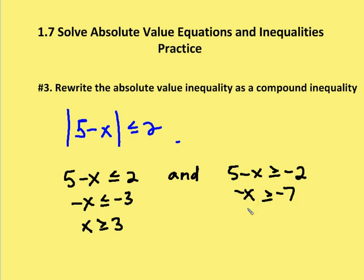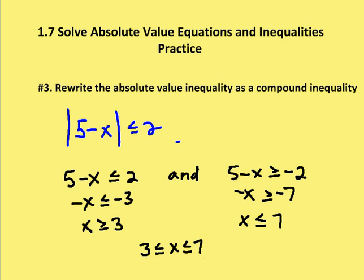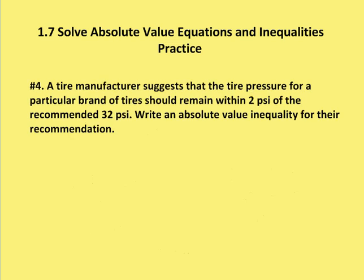And again, dividing by negative 1, I get x. Changing the direction of the symbol: less than or equal to. Dividing negative 7 by negative 1 gives 7. So I maintain the integrity of the table — it's going to be less than the largest value, greater than the smallest value. I can rewrite this as 3 is less than or equal to x, which is less than or equal to 7. And that is my result for this particular compound inequality.